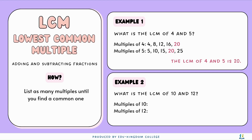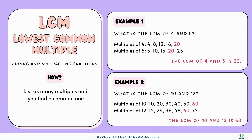Example 2: what is the LCM of 10 and 12? We have to again list the multiples of 10 and 12 until there's a common one. We can see that the lowest common multiple is going to be 60, so the LCM of 10 and 12 is 60.